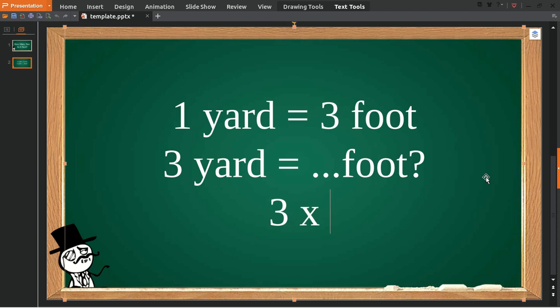then because we have three on the left, we must have three on the right as well, and then multiply it with this number. Okay, now three multiplied by one yard equals three yards, and three multiplied by